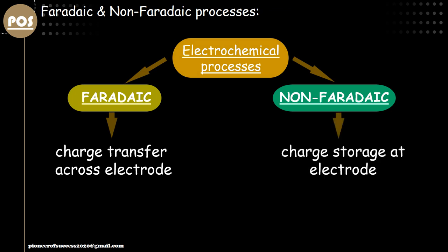In a non-faradic process, there is no electron or true electronic exchange between the electrode and electrolyte. Rather, there is a charge accumulation near the electrode surface. For example, if we have a supercapacitor dipped into an electrolyte, the supercapacitor surface has a surface charge which attracts the oppositely charged ions in the electrolyte. Due to this attraction near the electrode surface, we have more oppositely charged ions compared to the co-ions, and that actually creates a local charge accumulation. This process is known as a non-faradic process.